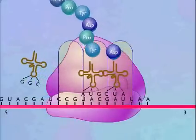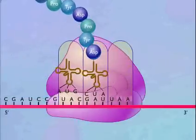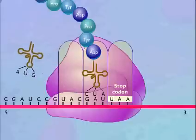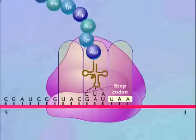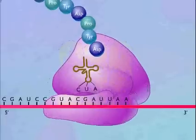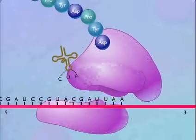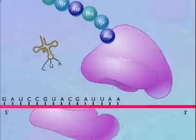Elongation of the polypeptide is terminated when a stop codon moves into the A-site. A stop codon does not specify an amino acid and does not have a corresponding transfer RNA. The ribosome dissociates into the 30S and 50S subunits and the messenger RNA and protein are released.